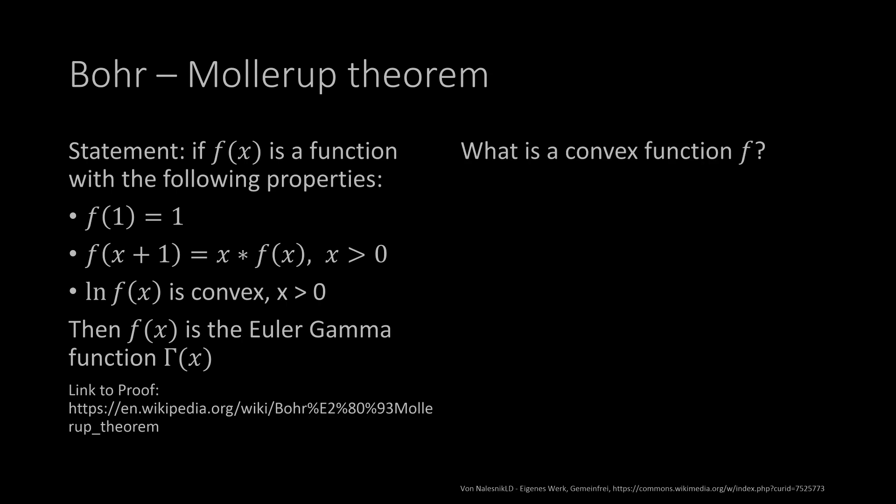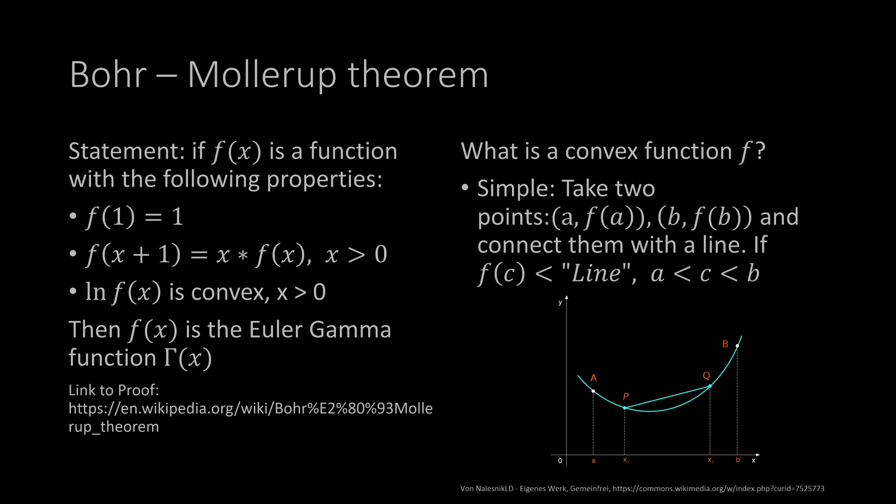What is a convex function? If we have two points — let's call them A, f(A) and B, f(B) — and you take these two points and connect them with a line as shown in the picture, the graph of the function has to lie under that line. And this must be true for every two points you take in the whole interval you want the function to be convex in.